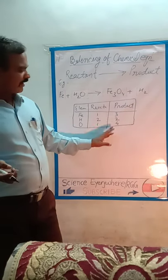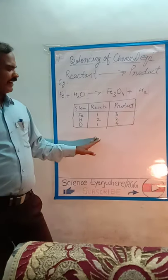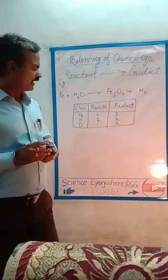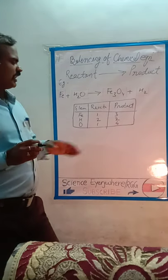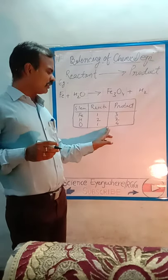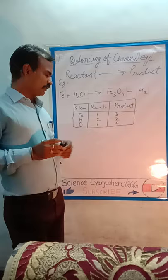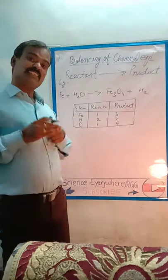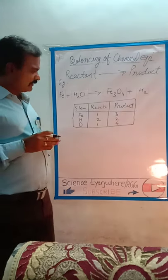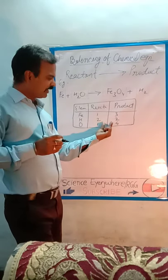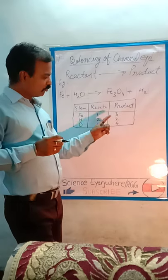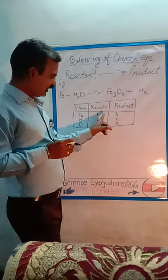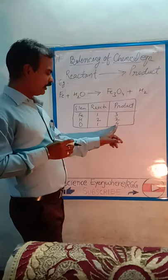On the product side hydrogen is two, oxygen on the reactant side is one and on the product side is four. This shows imbalance because the number of atoms of reactants and products are not equal. We identify which element has the biggest number in the table.